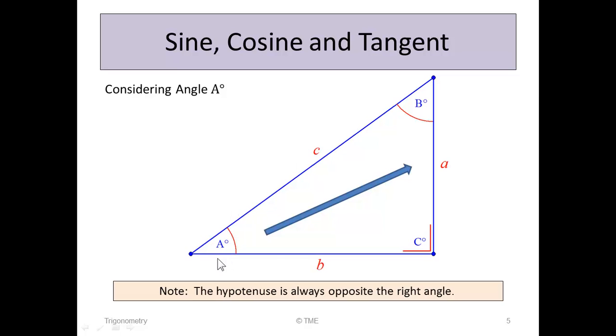This side touches angle A, and this side also touches angle A. Both C and B touch angle A, but this side here does not. So this side here is considered the opposite for angle A.